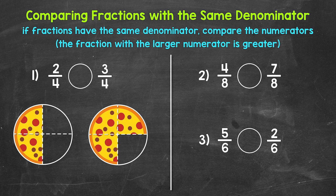Let's jump into number one, where we have two-fourths and three-fourths. So reading this comparison from left to right, we have: two-fourths is greater than, less than, or equal to three-fourths. So which fraction here is greater? Now, if fractions have the same denominator, all we have to do is compare the numerators — the top numbers. The fraction with the larger numerator is greater.